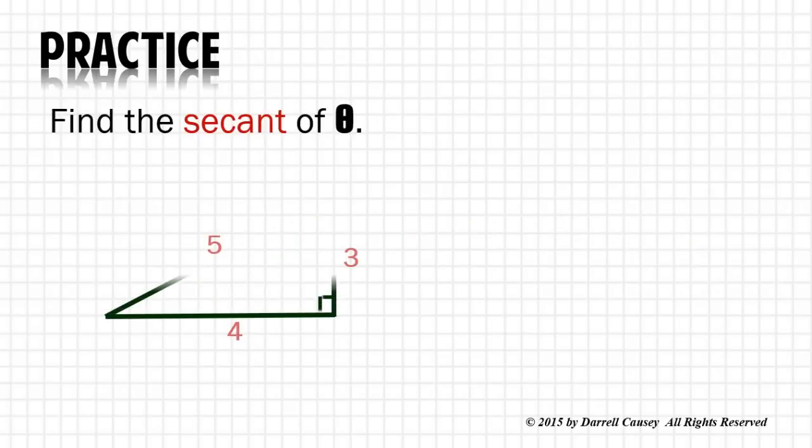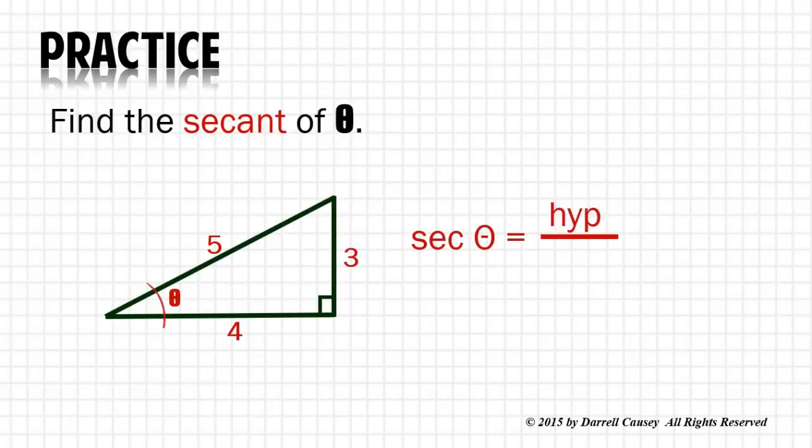Find the secant of θ. Secant goes with cosine, so it's hypotenuse over adjacent. There's our adjacent side, so it's 5 over 4.